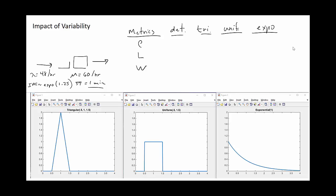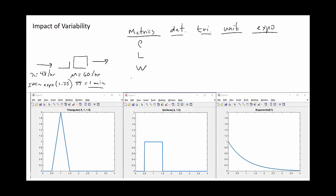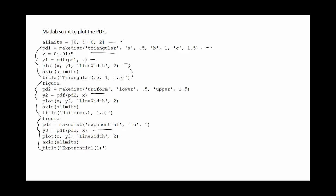Before getting to the queuing analysis, let me briefly discuss how I generated these density functions using MATLAB. We set the axis limits, then generated three plots — one each for the triangular, uniform, and exponential distributions. We used the makedist function to create each distribution, set the x-axis range, generated PDF points, then plotted the values and set the axis and title. It's a very straightforward process.